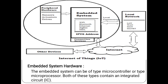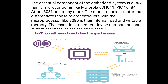Embedded system hardware: the embedded system can be a type of microcontroller or type of microprocessor. Both of these contain an integrated circuit. Normally, the embedded system will have Wi-Fi, Bluetooth, Ethernet, Zigbee, or similar interfaces through which we can communicate over the network. The essential component of the embedded system is the RISC family microcontroller, like Motorola 68HC11, PIC16F84, and Atmel 8051, and many more. The most important factor that differentiates this controller from a microprocessor like 8085 is the internal read and writable memory.